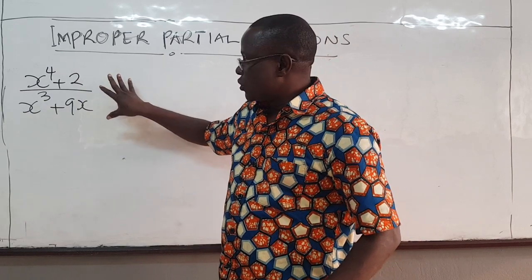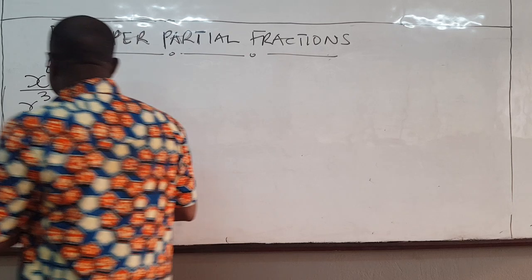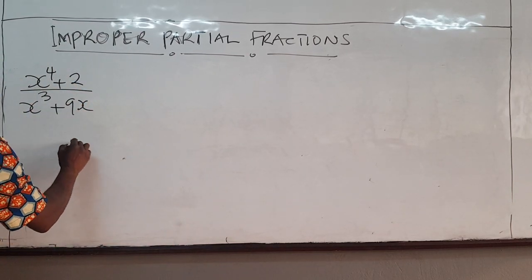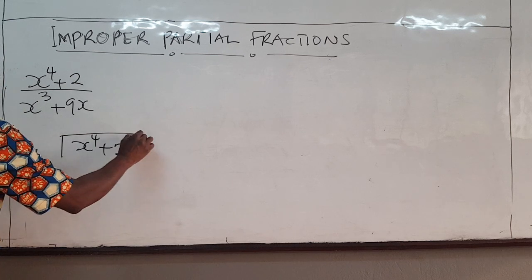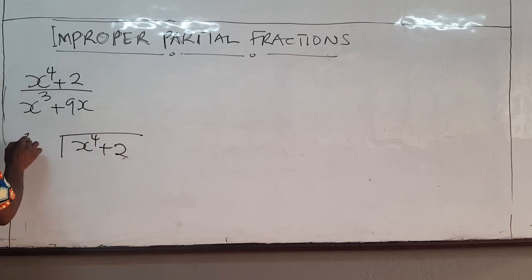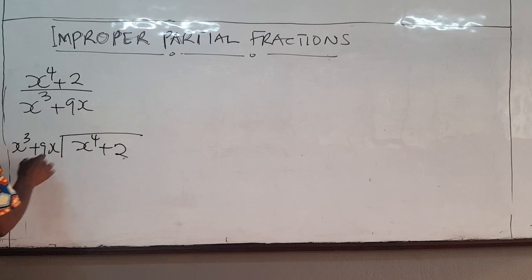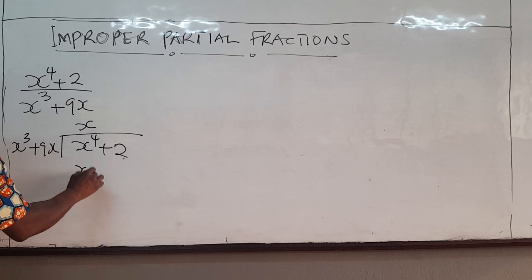And so we use long division of this. So first we have x to the power 4 plus 2 and then x cubed plus 9x. x cubed goes in here, I have x. This and this gives me x to the power 4.